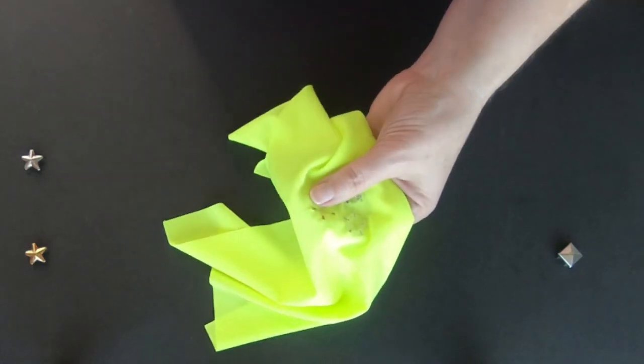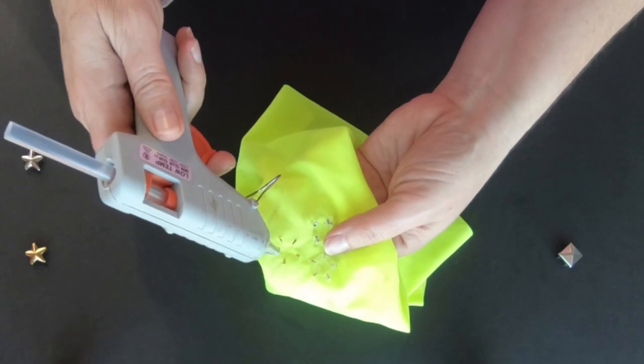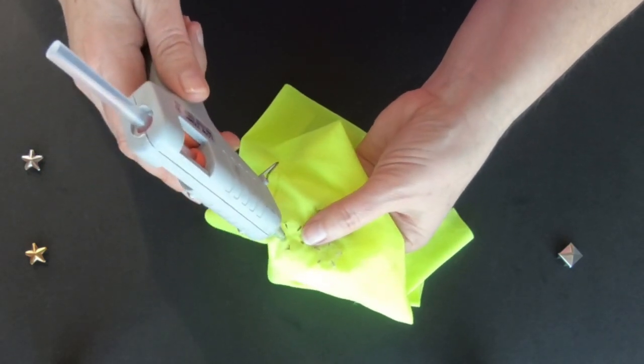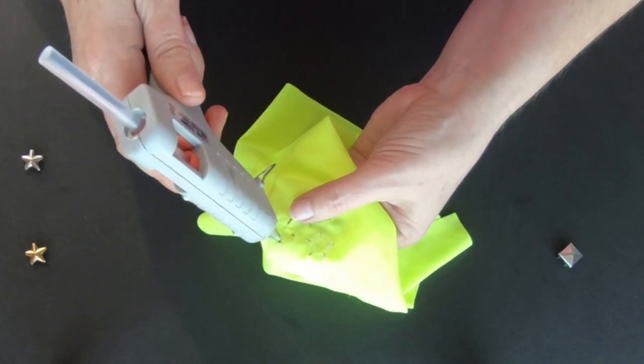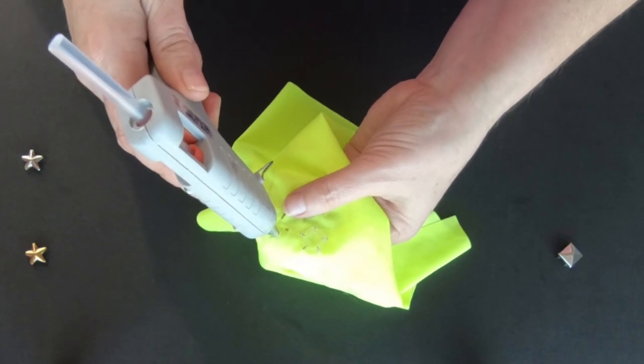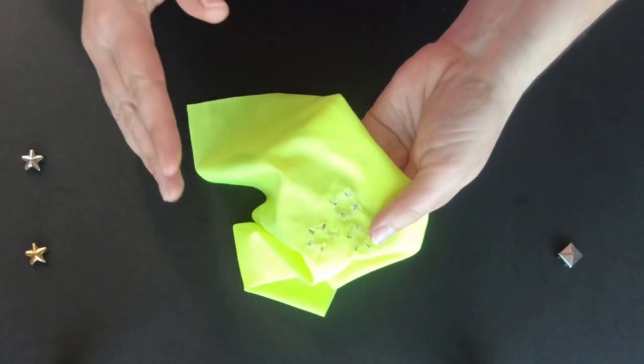So what I like to do is I like to take my glue gun and I'm just going to put a little bit of glue from the glue gun all the way around on those ends and then you let it dry.